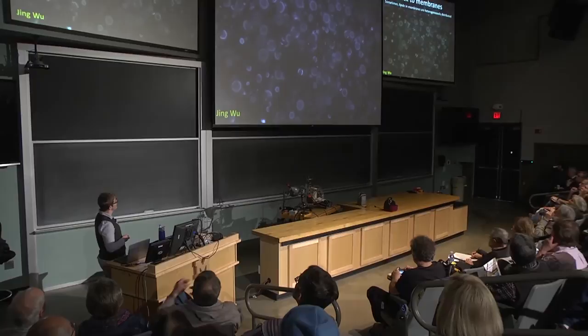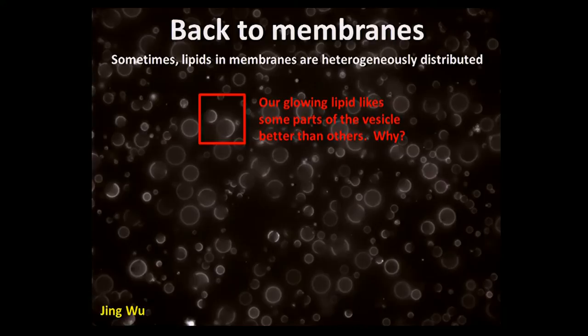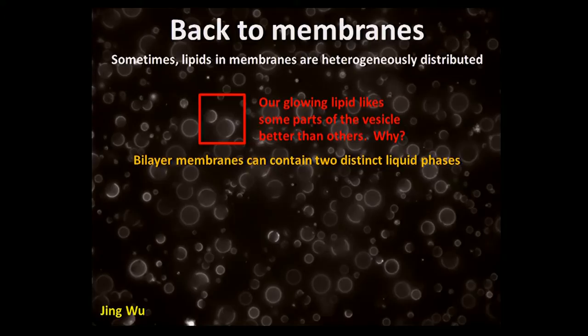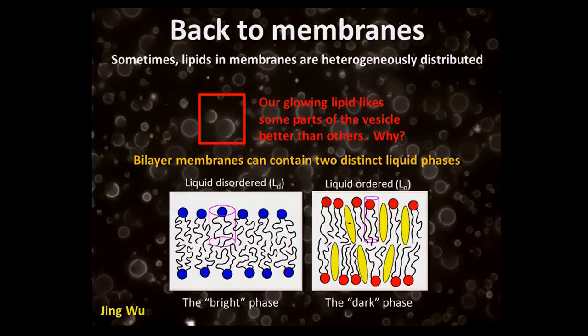Back to membranes. These vesicles are under slightly different conditions than the ones I showed you before: the probe is distributed heterogeneously — the vesicles are brighter on one side than the other — because they contain two distinct liquid phases, like methanol and cyclohexane, but here these are phases in the bilayer plane. One phase is called the liquid disordered phase — that's the bright one in this picture — and the dark phase is called liquid ordered. They're different in that they have different chemical compositions. When the right lipids are mixed together in these vesicles, you can see them actually separate.